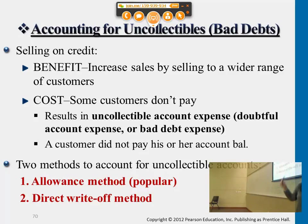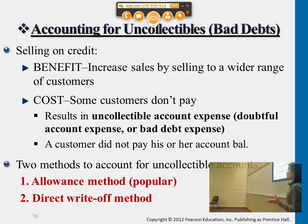The allowance method is encouraged and also regulated for all publicly traded companies. With the allowance method, we do an estimation upfront. With the direct write-off method, companies wait until they know the exact customer who didn't pay the money, then they write off the accounts.